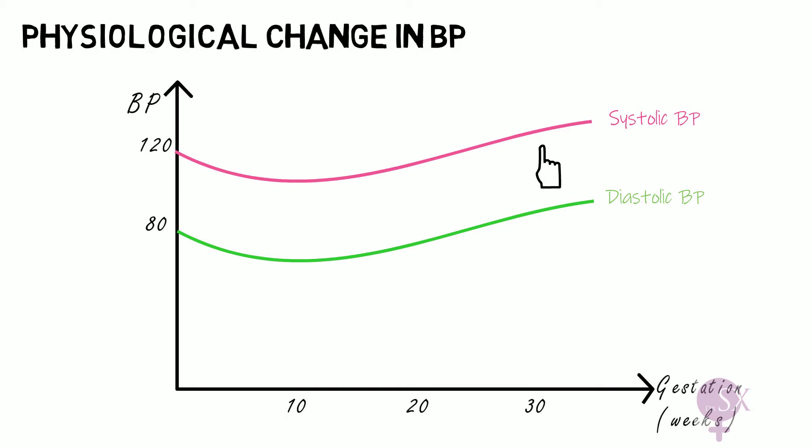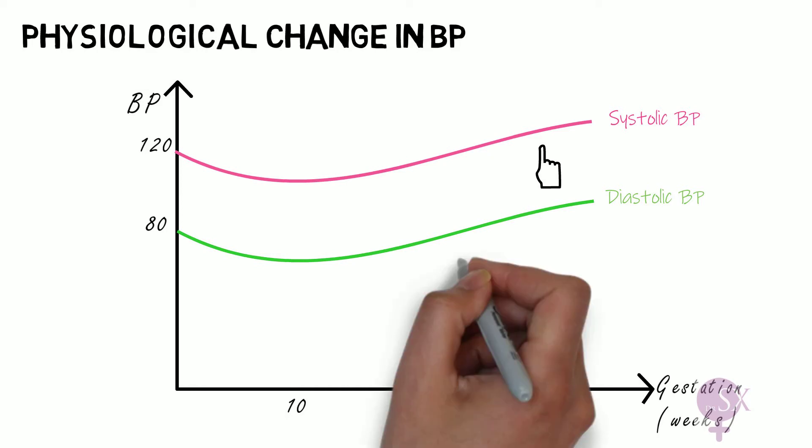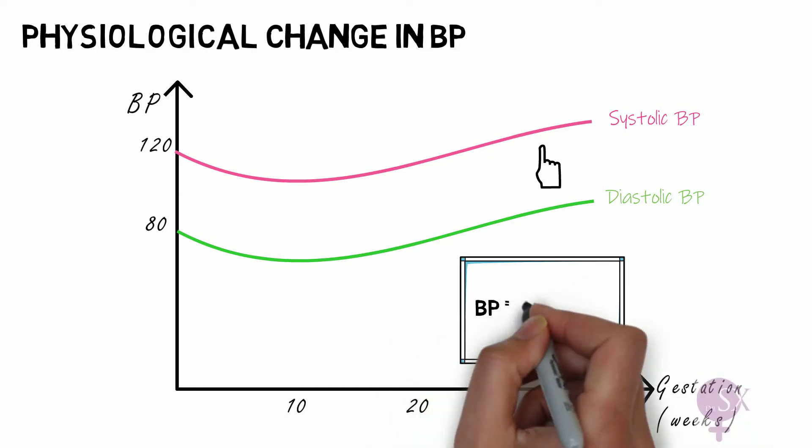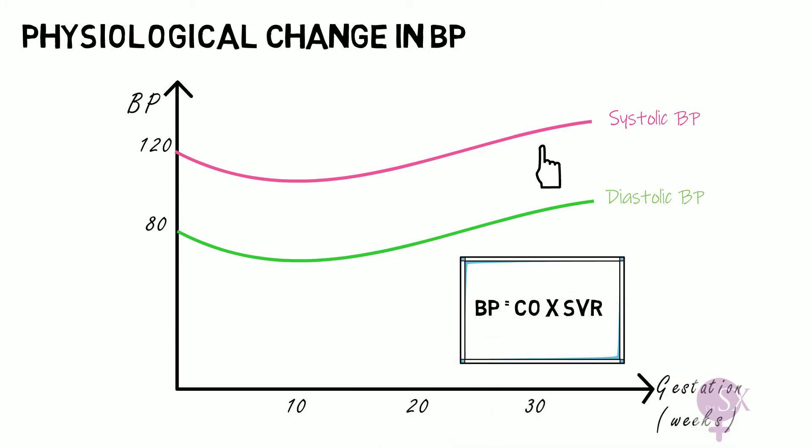To understand why this happens, recall the equation from pre-clinical years: blood pressure is the product of cardiac output and systemic vascular resistance. It is the systemic vascular resistance which decreases at the beginning of pregnancy due to systemic vasodilatation. A low SVR results in a low blood pressure, and this explains the physiological dip in blood pressure during pregnancy.